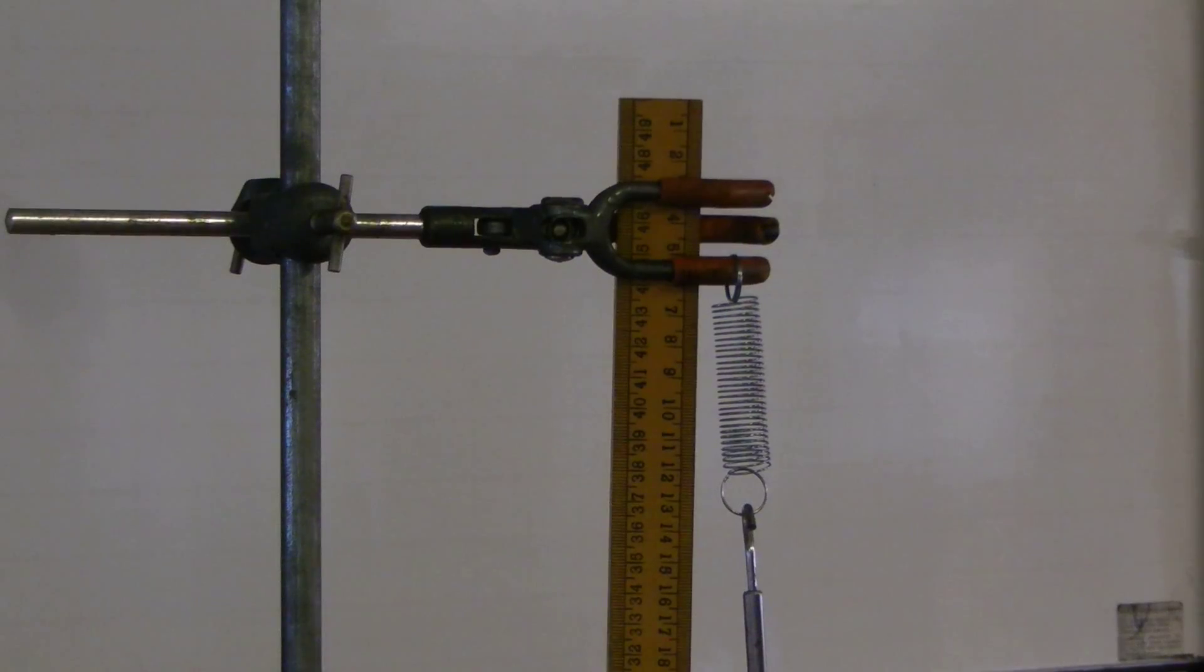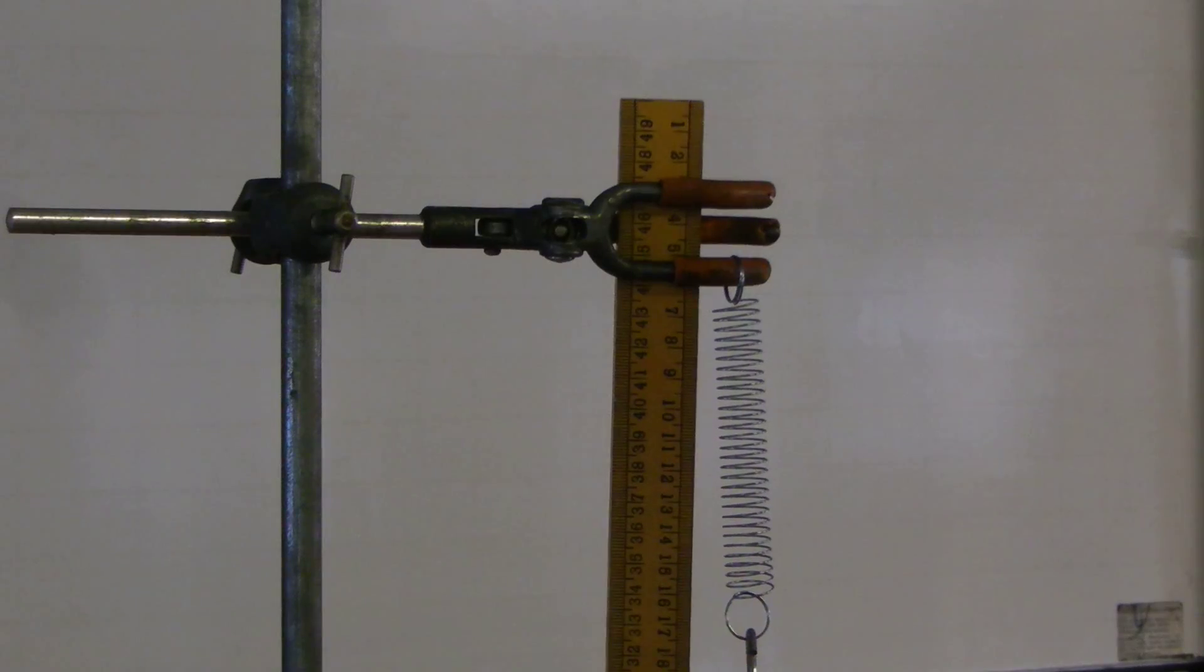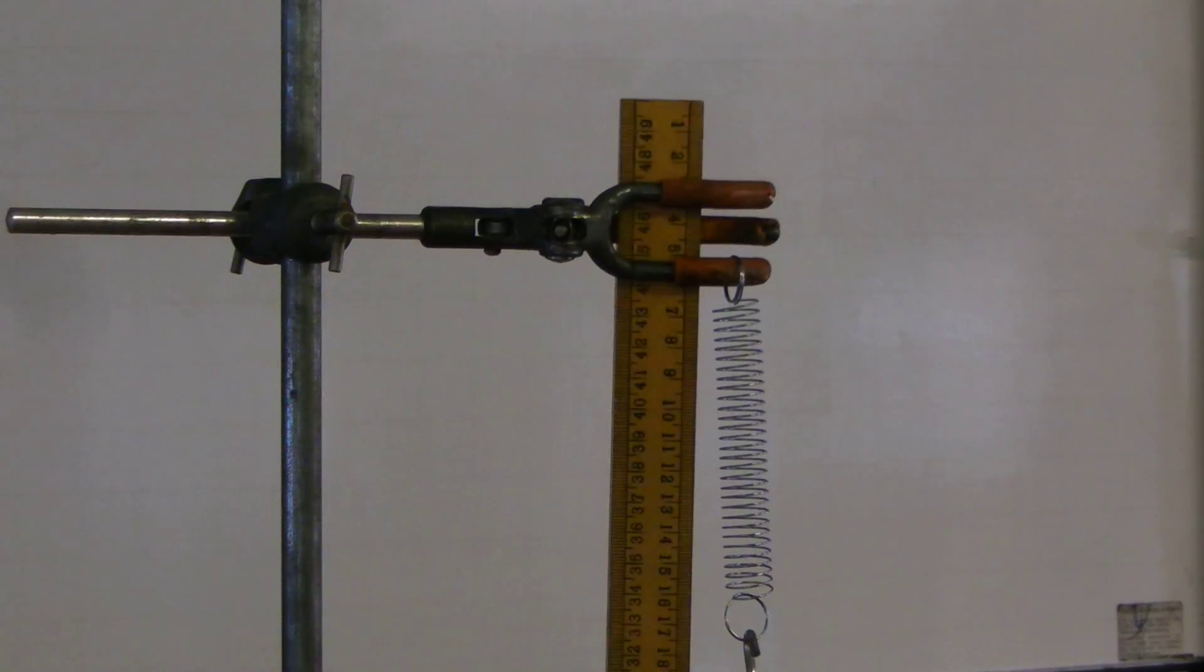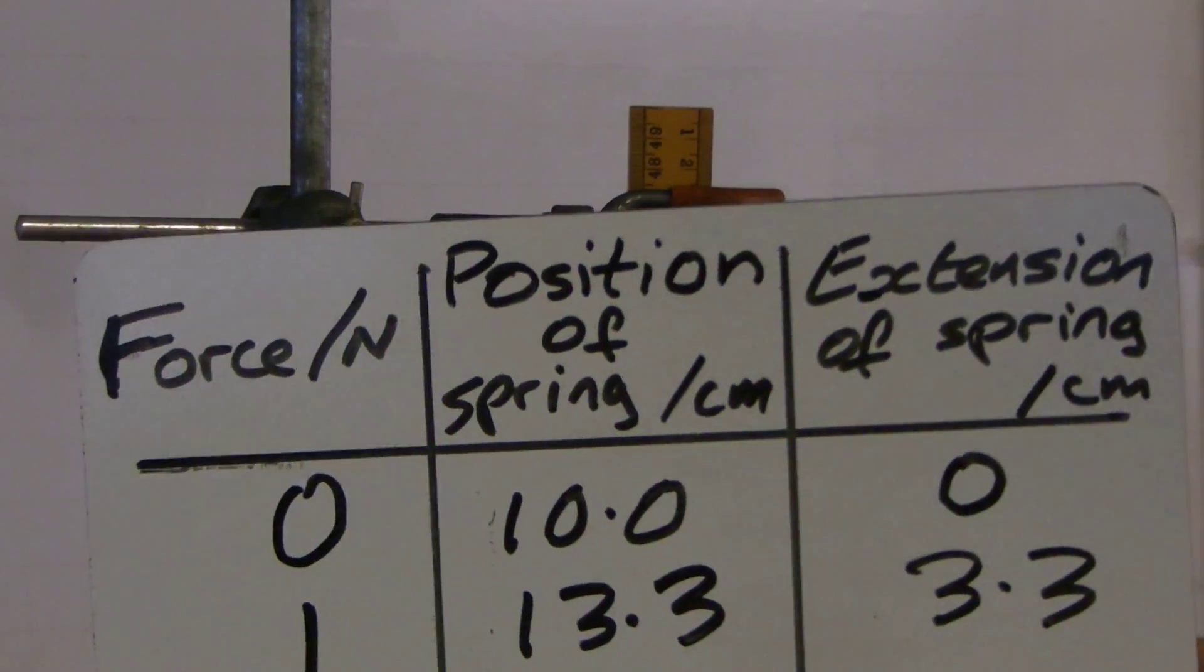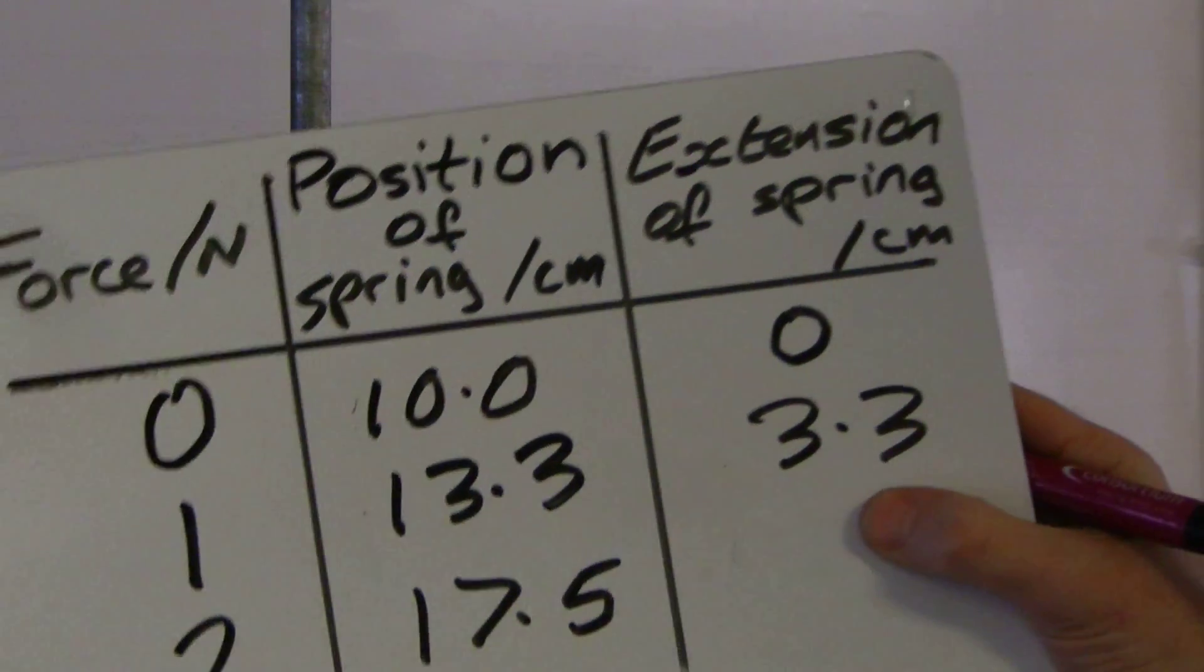Next, add another newton. So this is me now up to 2 newtons. And I allow the spring to again stretch. Same thing. Measure the position of the spring now to the lowest point. That looks like 17.5 to me. So back to my results table. 2 newtons. 17.5.